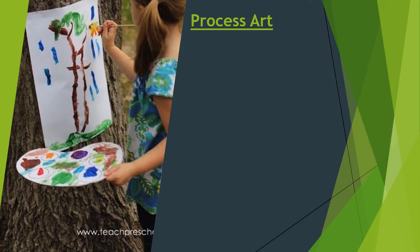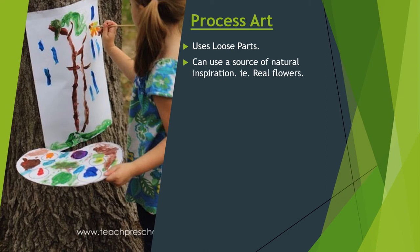Process art is another word for child-led art. When doing process art, we tend to use a lot of loose parts and can also use a source of natural inspiration — for example, a vase full of flowers on the middle of the art table. Some children might look at the flowers and decide to draw or paint them on paper. Another child might use the flowers as a paintbrush. Yet another might paint on the flowers to make them blue, green, or purple. All of these processes are wonderful ways for children to explore, learn, and express themselves through art.